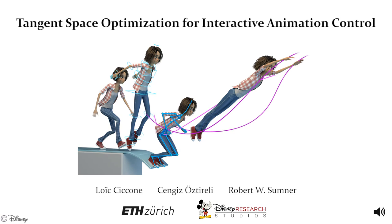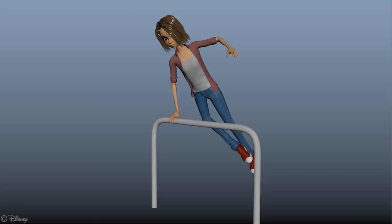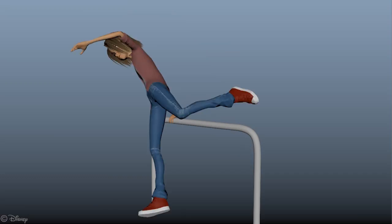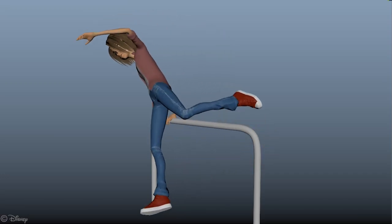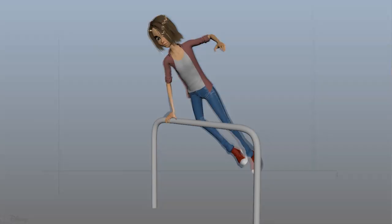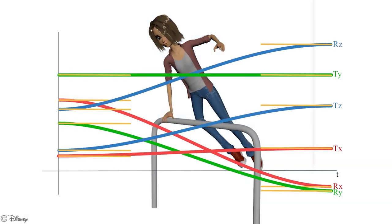We present tangent space optimization for interactive animation control. Character animation consists in defining key poses that are interpolated over time. If the interpolation does not match the artist's vision,